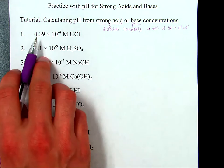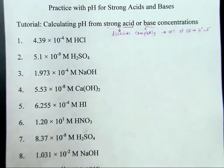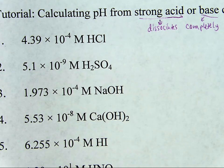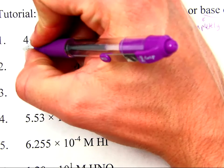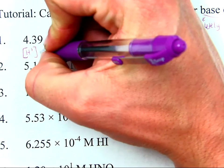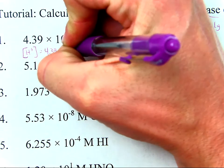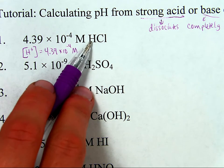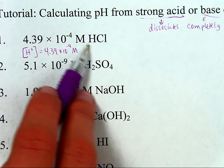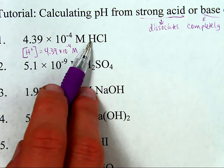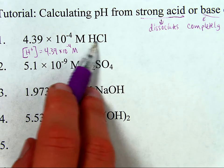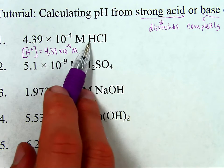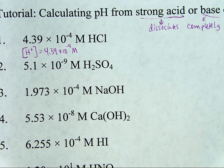That means that if you see, for example, this first question here, where it says the concentration of hydrochloric acid is 4.39 times 10 to the negative fourth molar, that means concentration of hydrogen ion is the same, 4.39 times 10 to the negative fourth molar. We assume 100% of this dissociates, so concentration of hydrochloric acid is equal to concentration of hydrogen for a strong acid.